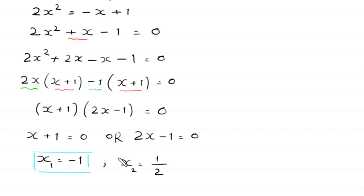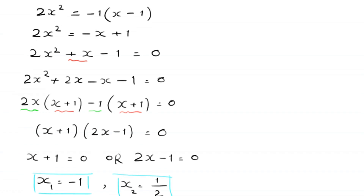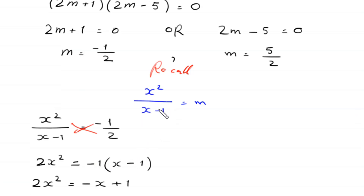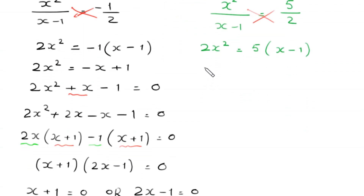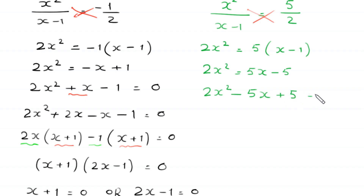Now to find the other two solutions, we substitute m equals 5 over 2 into x squared over (x minus 1) equals 5 over 2. Using cross multiplication: 2x squared equals 5(x minus 1), which gives 2x squared equals 5x minus 5. Moving terms to the left: 2x squared minus 5x plus 5 equals 0.